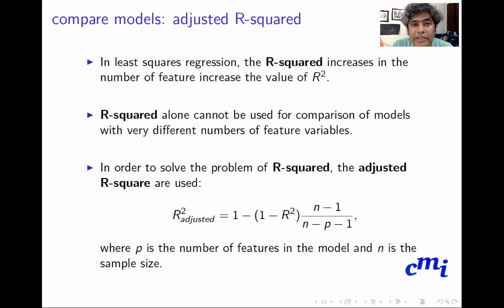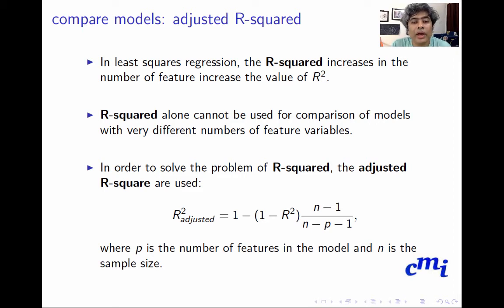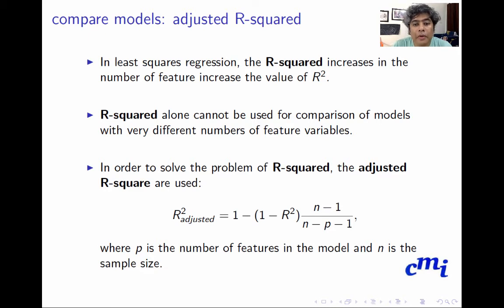There is a variation of R-squared called Adjusted R-squared. In least squares regression, R-squared has a problem: it increases as the number of features increases. If you keep adding more features, R-squared keeps increasing, so it is not a good model selection criterion on its own. R-squared alone cannot be used to compare models with very different numbers of features, because it will keep preferring the more complex model over the parsimonious one.